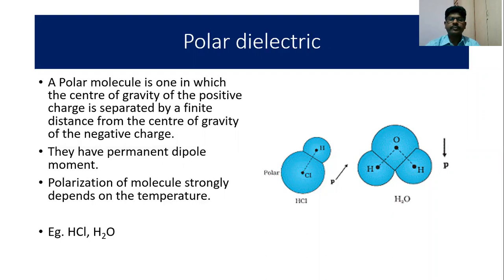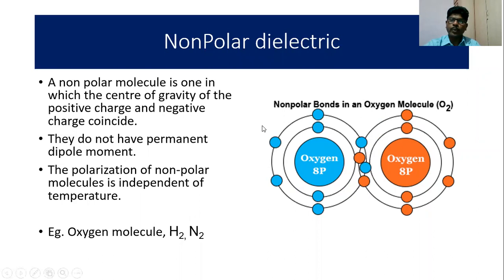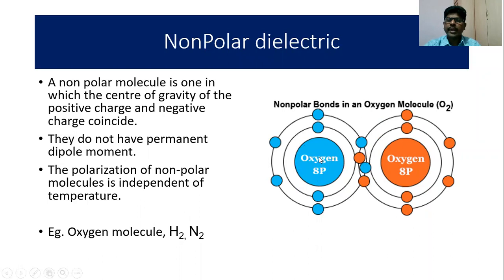A non-polar molecule is one in which the center of gravity of the positive charge and negative charge coincide — that is, they act at the same point. The center of gravity of the nucleus positive charges is at the center, and likewise the center of gravity of all the electrons is also acting at the center. So there is no distance between the center of positive charge and center of negative charge.